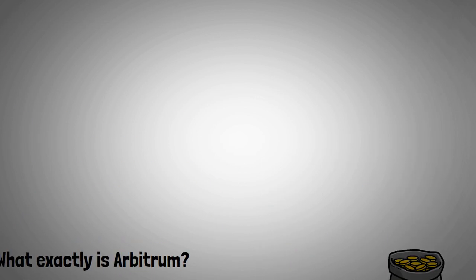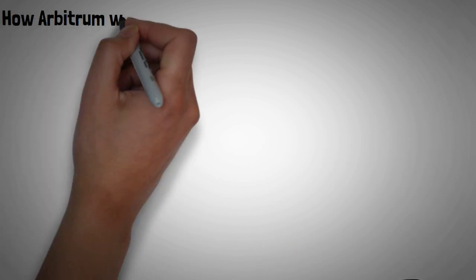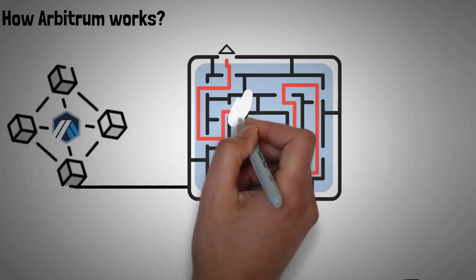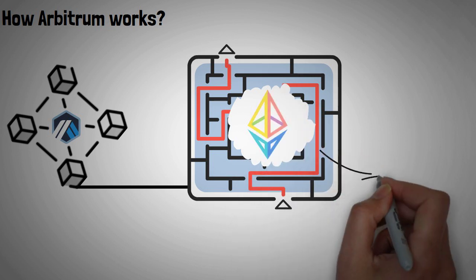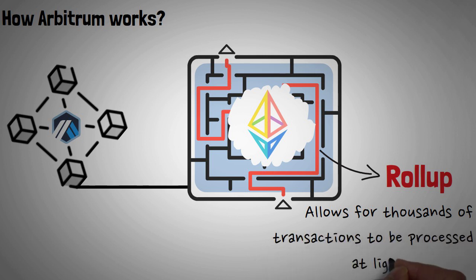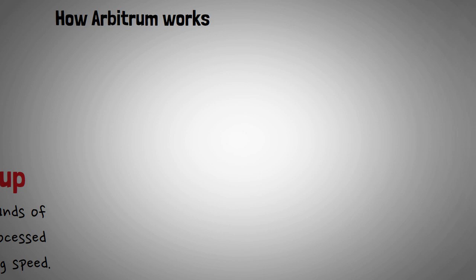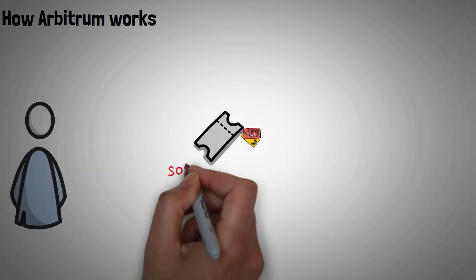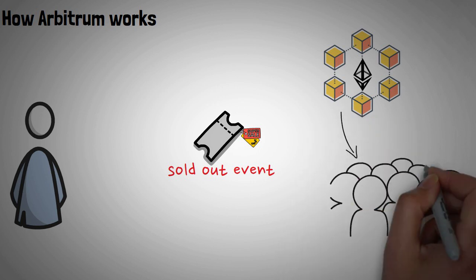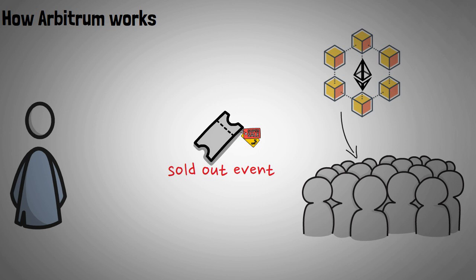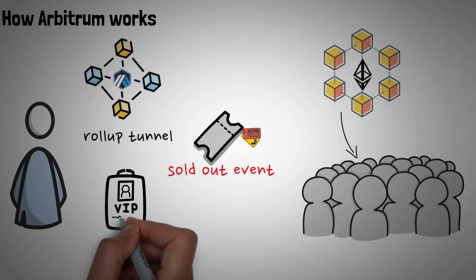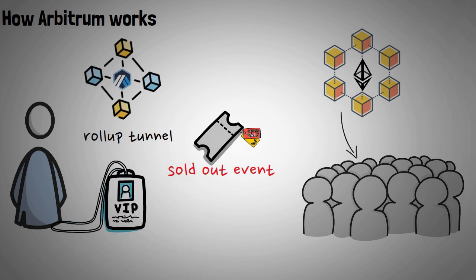You might be wondering how Arbitrum works to achieve this speed. Think of it this way: Arbitrum is like a secret underground tunnel that connects to the Ethereum mainnet. This tunnel is called a rollup, and it allows thousands of transactions to be processed at lightning speed. To put it into perspective, imagine you're trying to buy a ticket to a sold-out concert. The Ethereum mainnet is like the line of people waiting to buy tickets — it can take forever to get to the front. But with Arbitrum's rollup tunnel, it's like you have your own VIP entrance. You get your ticket in no time, and you're ready to rock out.